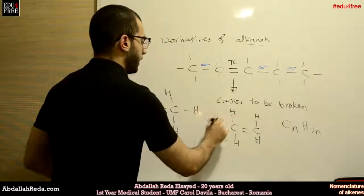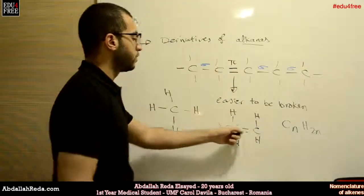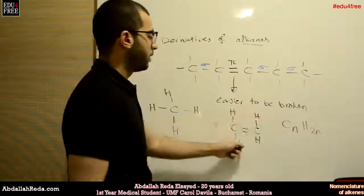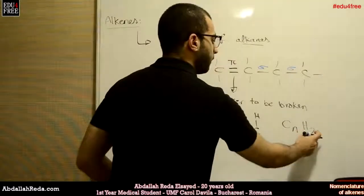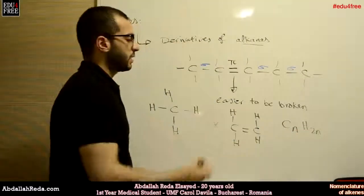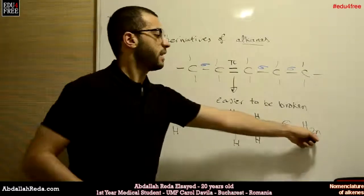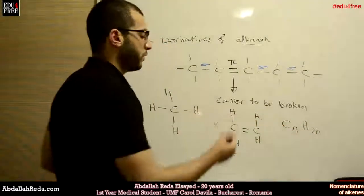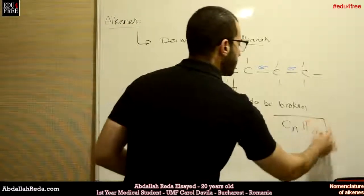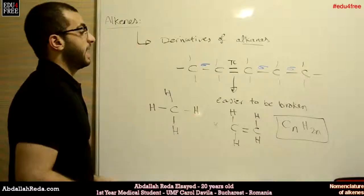Here, for example, in ethene we have two carbons and double the number of hydrogens - so two carbons, four hydrogens. And it's like this for the rest of alkenes: we have three carbons then six hydrogens, four carbons then eight hydrogens, and so on. So this is the basic formula for alkenes.